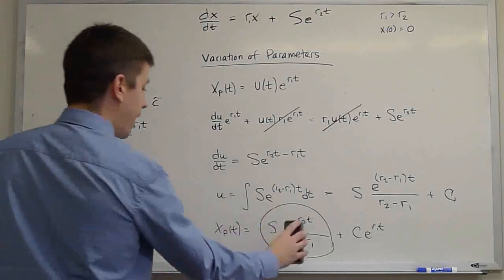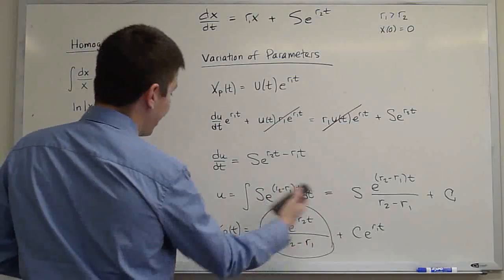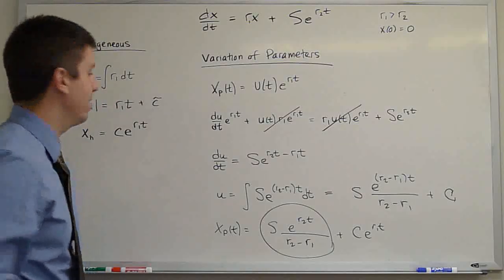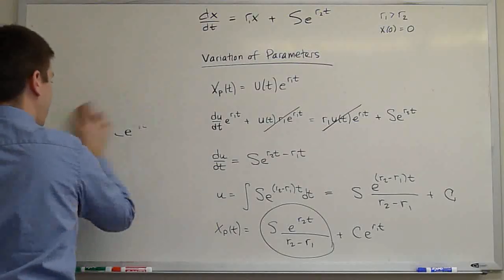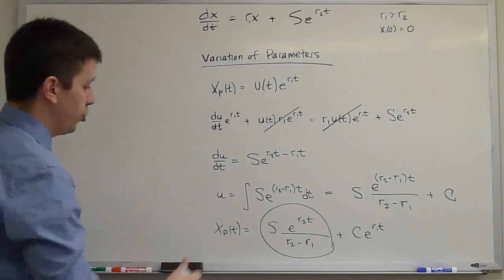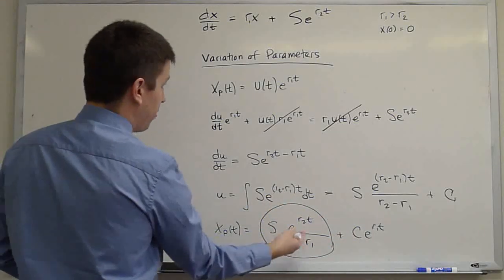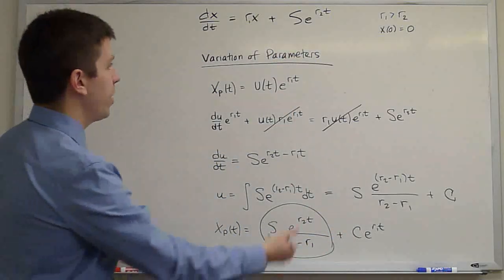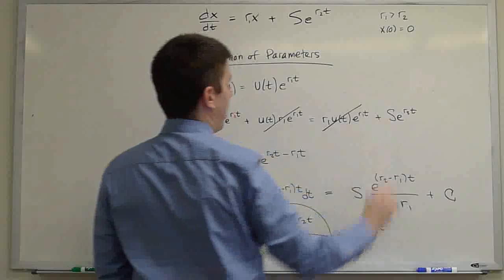So we found the unique particular solution or the general, again, the vocabulary is not as precise as we might like. But we can now write the general solution. It is in fact just this, the unique thing that satisfies the forcing plus an undetermined multiple of the homogeneous solution. We have only to satisfy the boundary condition.